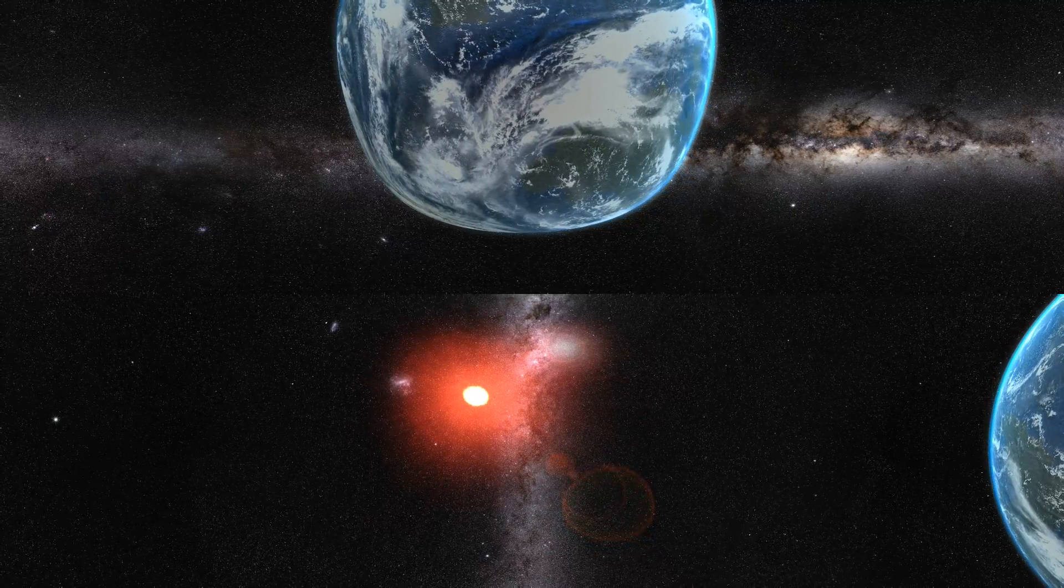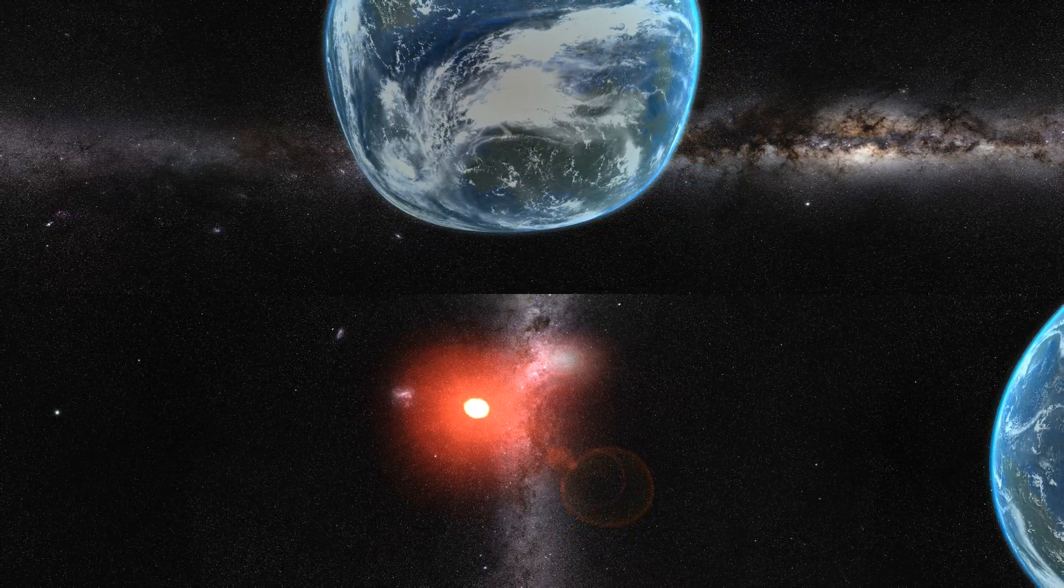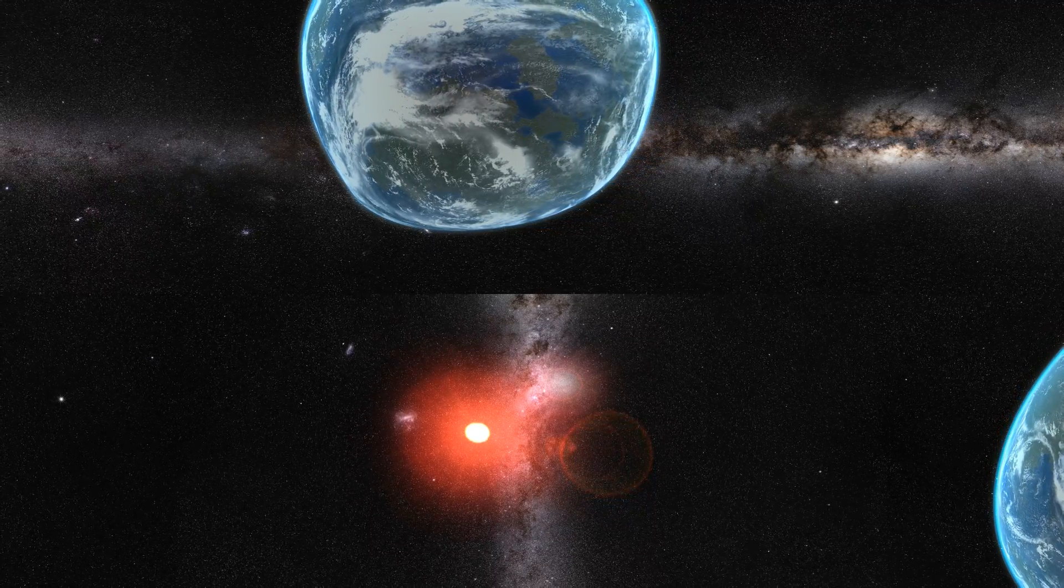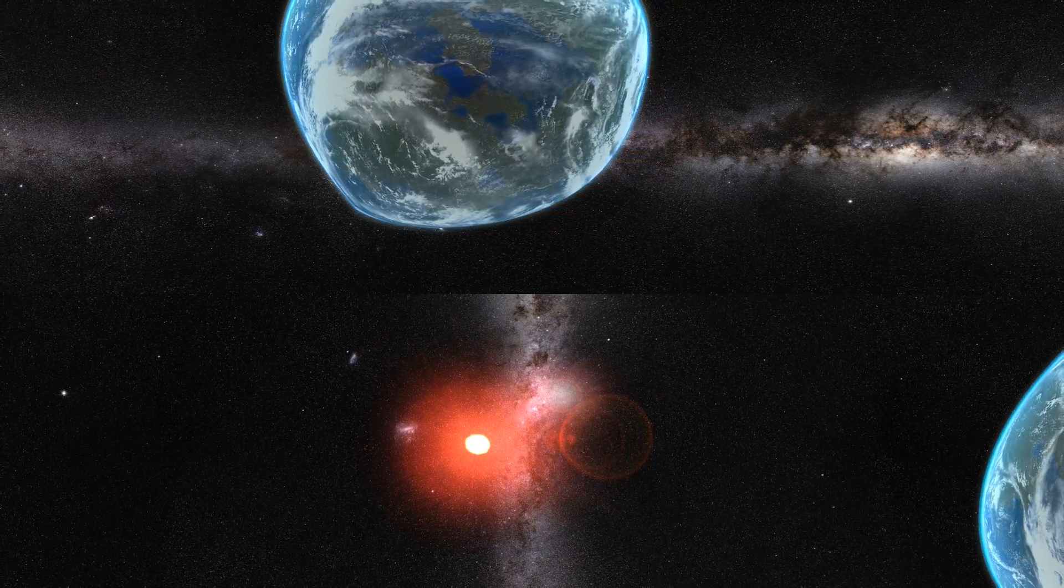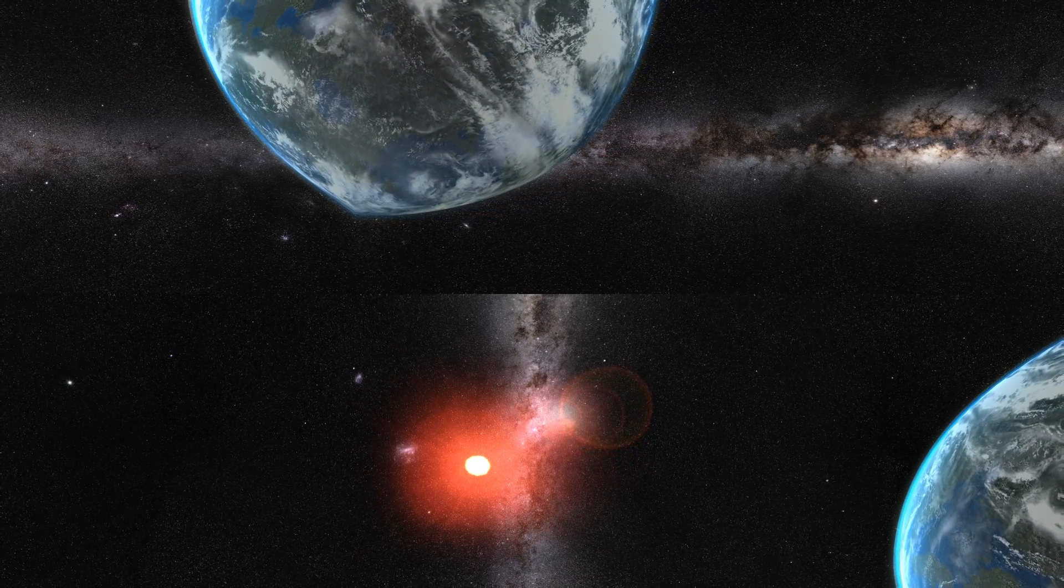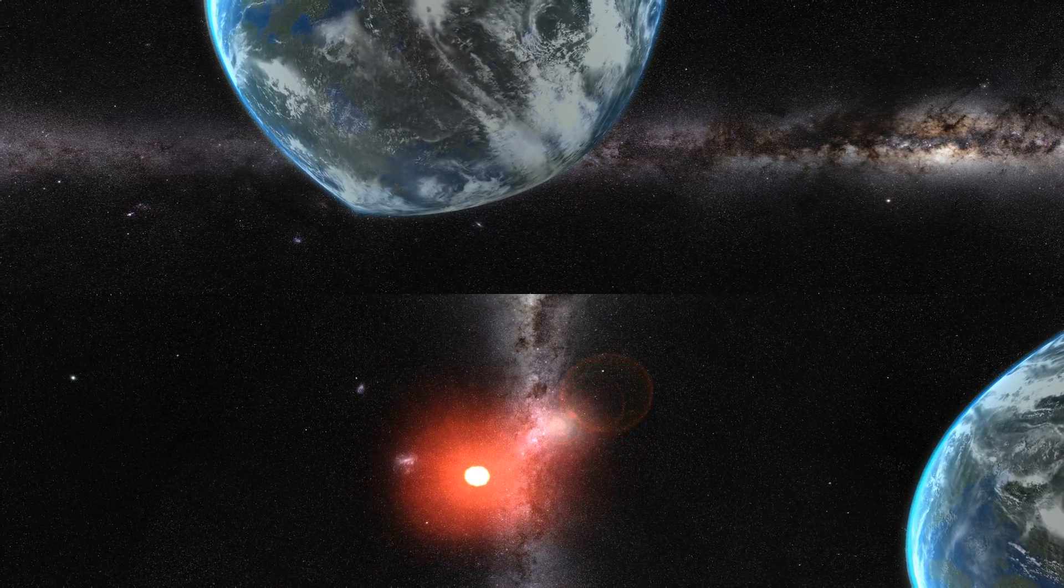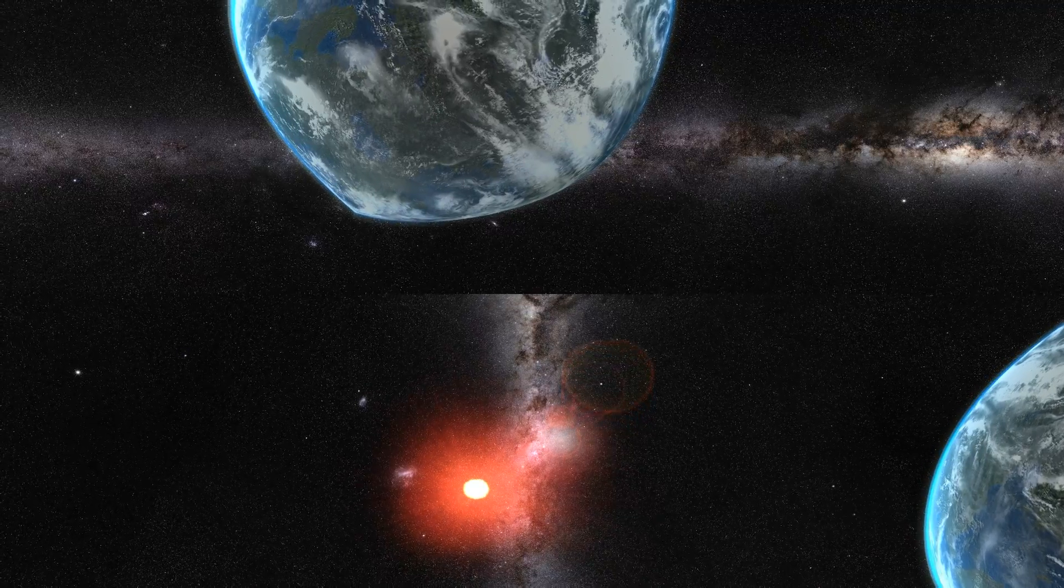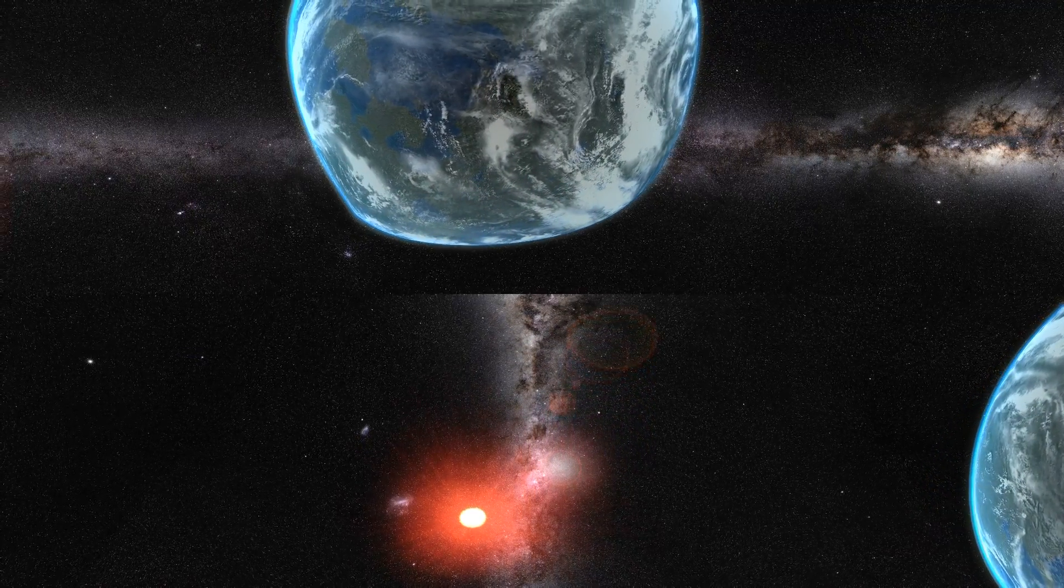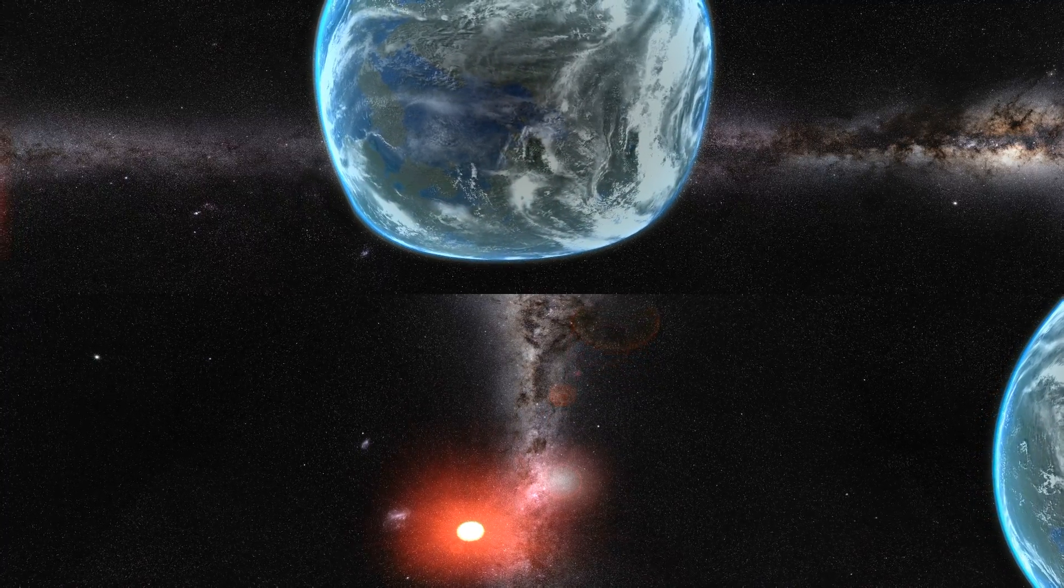The more data we get, the more signs we see pointing to the notion that potentially habitable and Earth-size exoplanets are common around these kinds of stars, study lead author Andrew Vanderberg, a researcher at the University of Texas at Austin, said in the same statement. As red dwarfs are the most common stars, the chances of Earth-type planets orbiting them are very high.